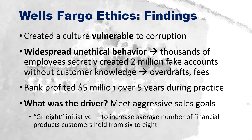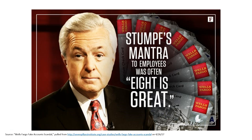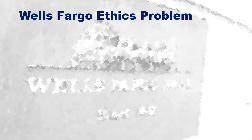The driver was to meet aggressive sales goals that came from the top — the idea of 'eight is great.' The initiative was to increase the average number of financial products per customer from six to eight. The industry average was about three accounts, but the culture promoted getting at least eight. The report found that the number eight was chosen because it rhymed with 'great,' so they could have the mantra 'eight is great,' which Stumpf frequently said to employees, and the whole culture revolved around this idea.